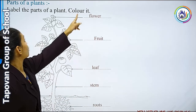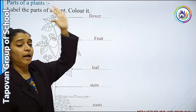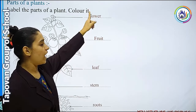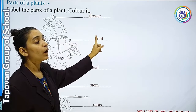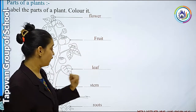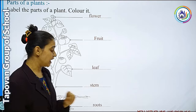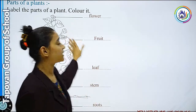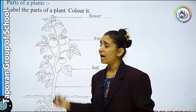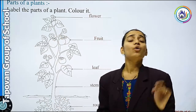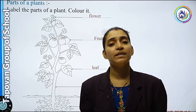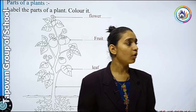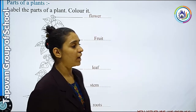तो plant के कितने Parts हैं? 5. कौन-कौन से? Flower, Fruit, Leaf, Stem, Roots. इसके अंदर आपको जो plant दिया है, उसके अंदर आपको जो भी color पसंद है वो आपको खुद से fill up करना है. Okay?